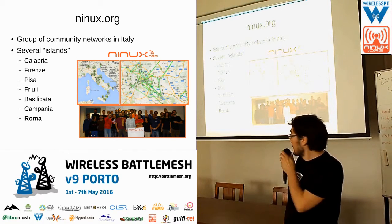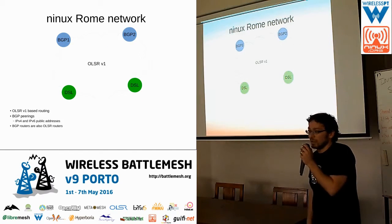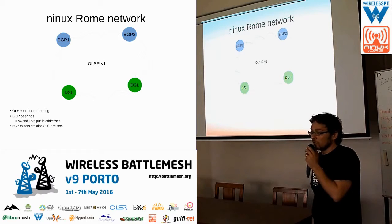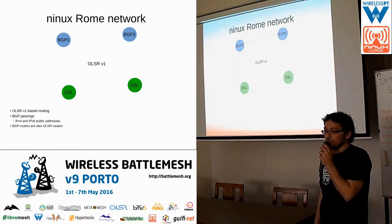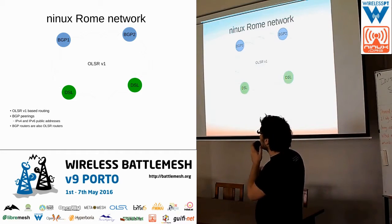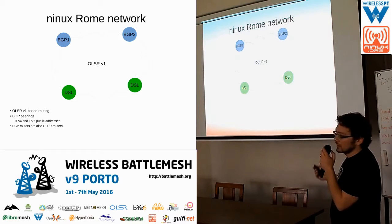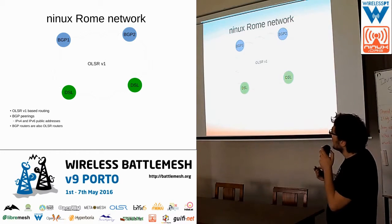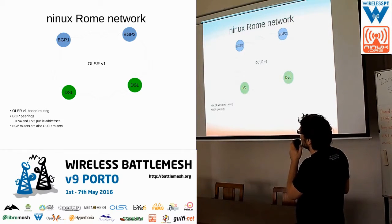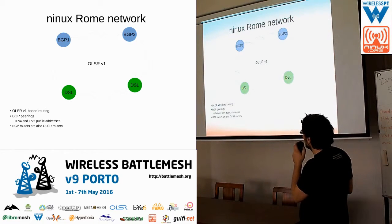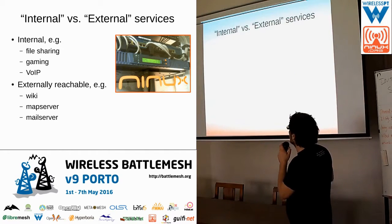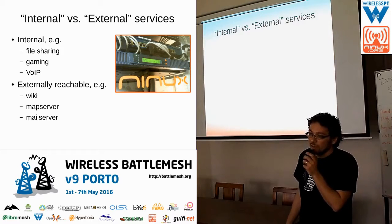I'm involved in the ninux Rome network and we have more or less this topology: we have an OLSR network with some gateways. Some of the gateways are BGP routers and some are DSL lines. The BGP routers are also capable of speaking OLSR version one, so we have IPv4 and IPv6 public addresses.